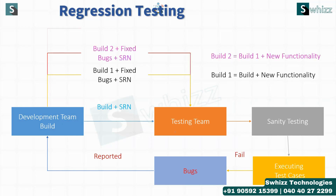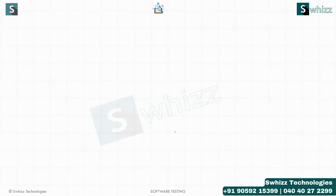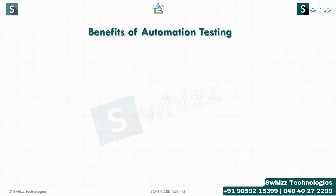With many different test cases to execute across many builds, this becomes a very time-consuming process. That's why the tester can feel bored doing the same repeated task, and because of this repetitive and boring process, they may commit manual errors.